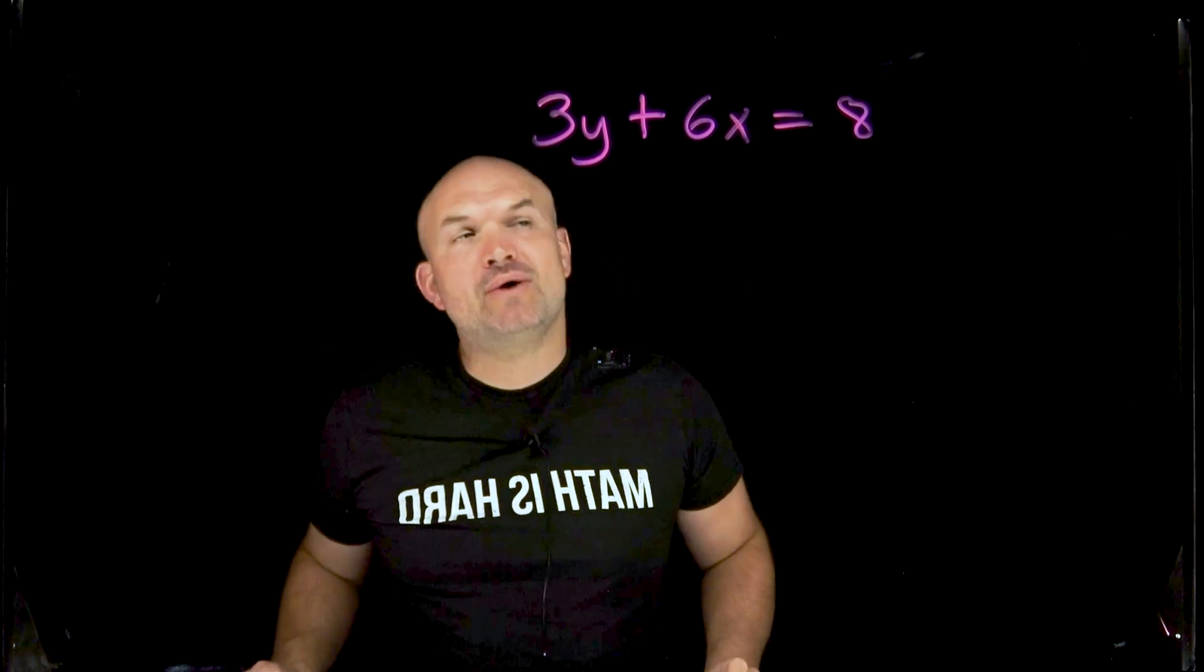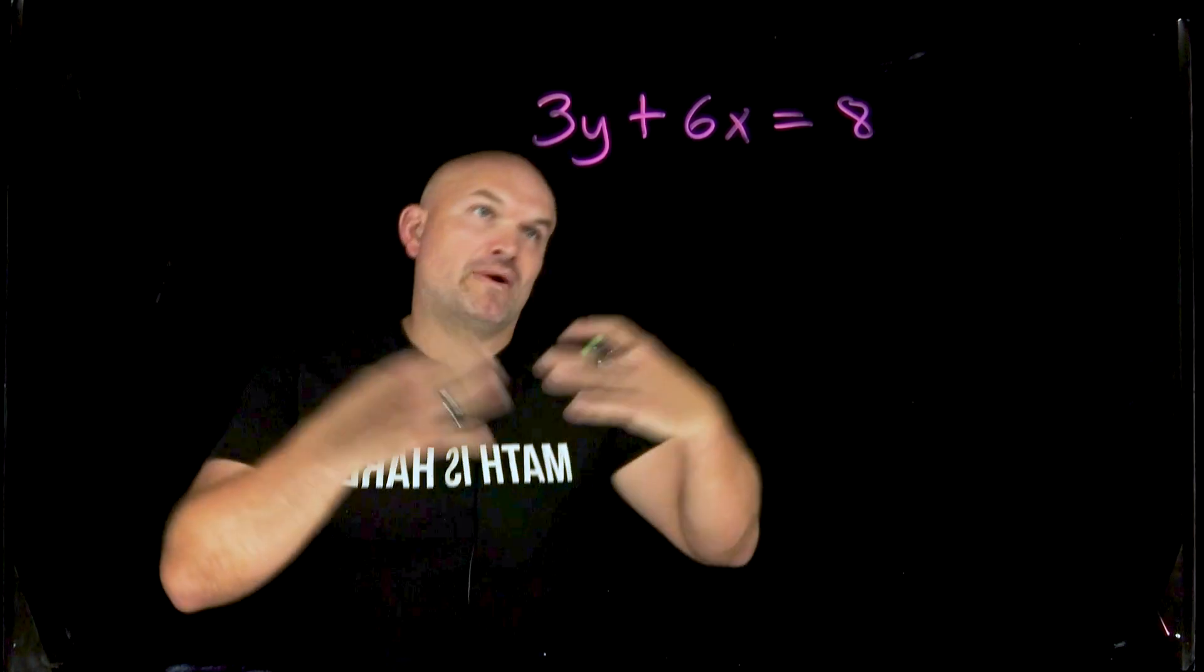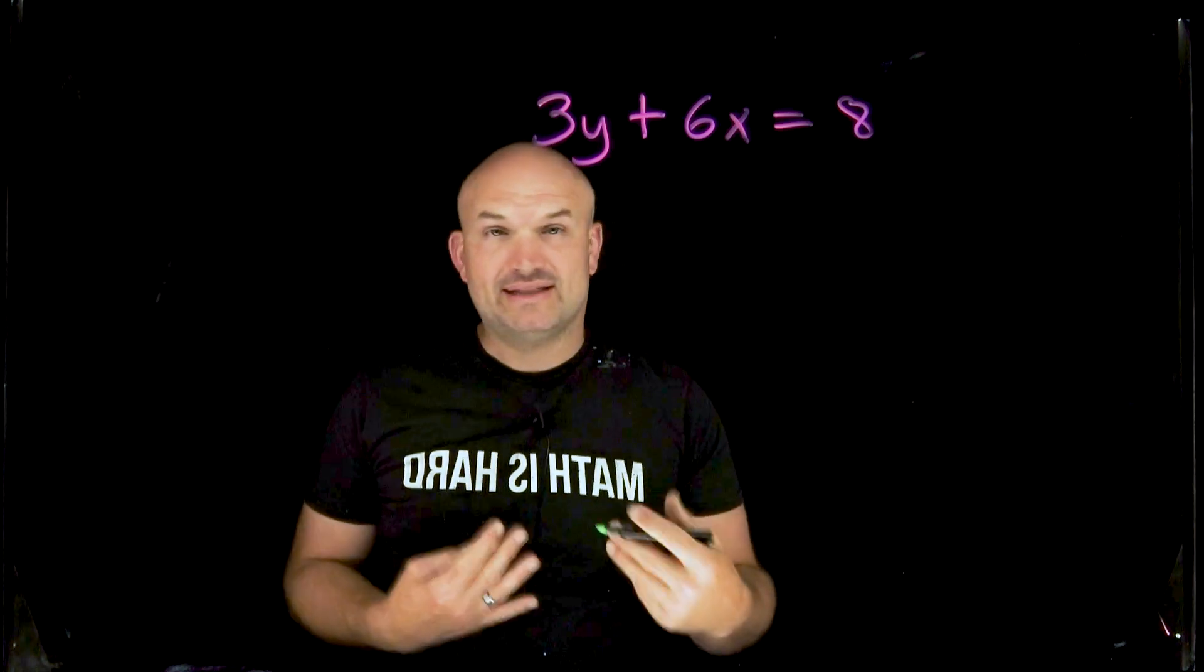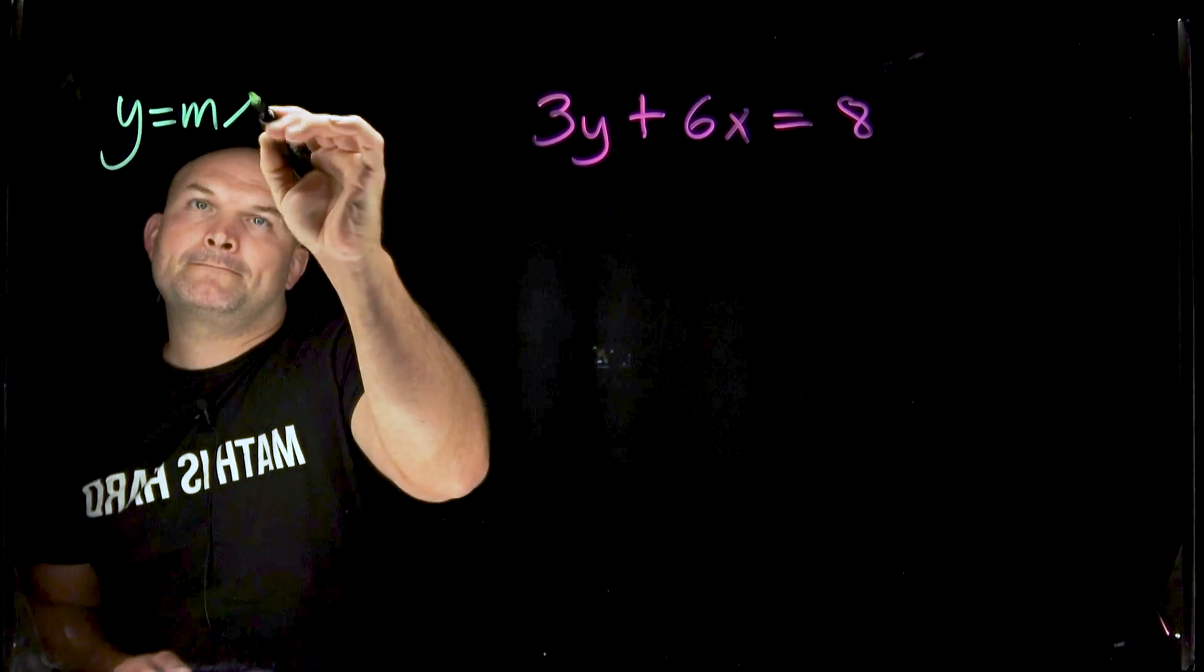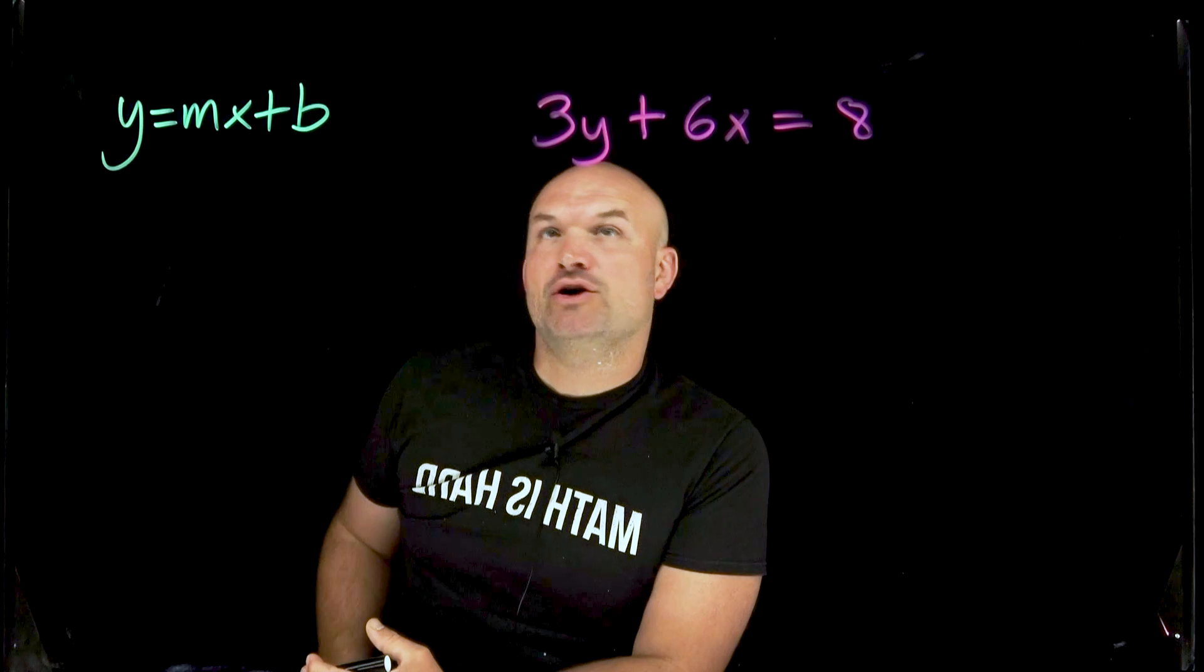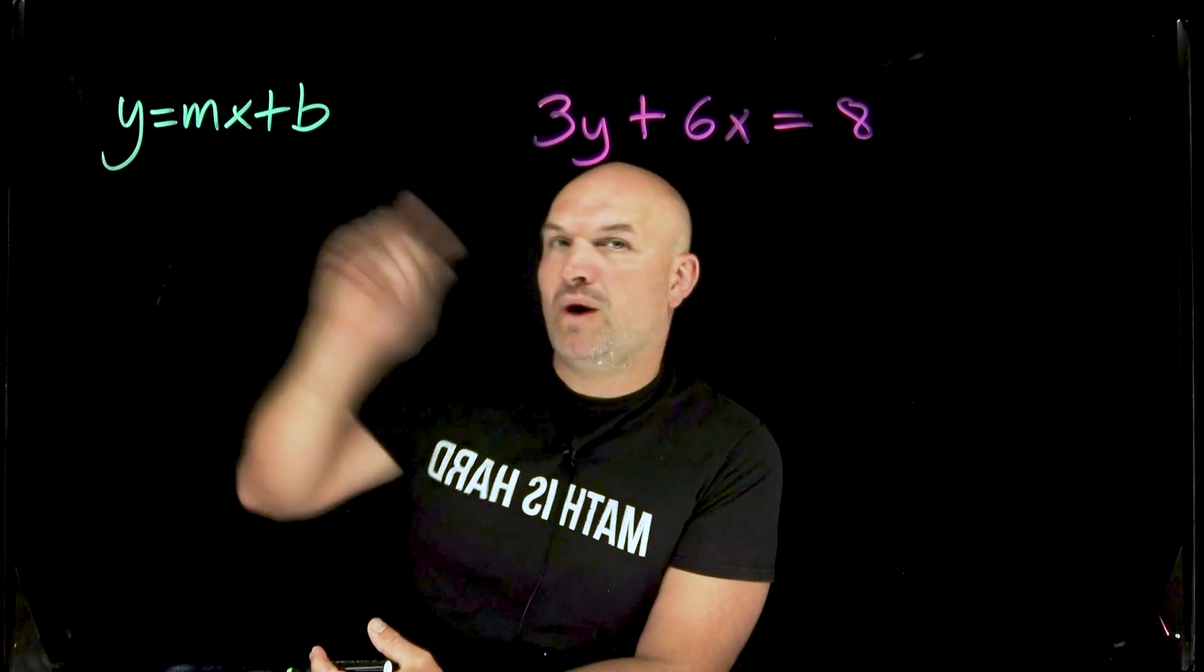Now typically when we want to find the slope or graph the line we can work with it in standard form, but typically we'll want to be able to write things in slope-intercept form. So what that means is we need to take this equation and rewrite it so our y is going to be solved.